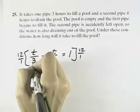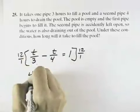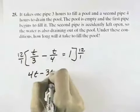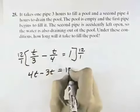In the first fraction, 3 cancels with 12, leaving 4T. In the second fraction, 4 cancels with 12, leaving 3T. And on the right, we have just 12.